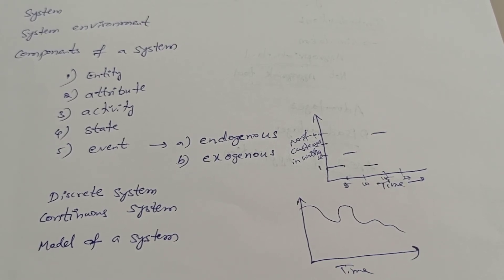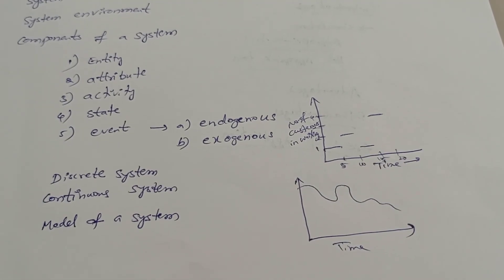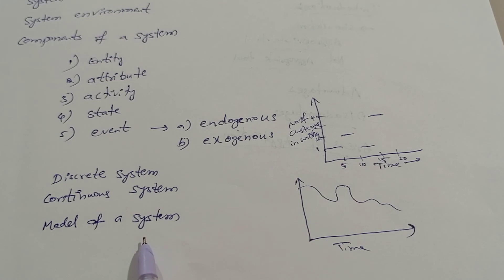Coming to the model of a system. Which model? For example, take a two-wheeler. Which model are you using, which model have you bought? It depends on the representation of a system for the purpose of studying the system.